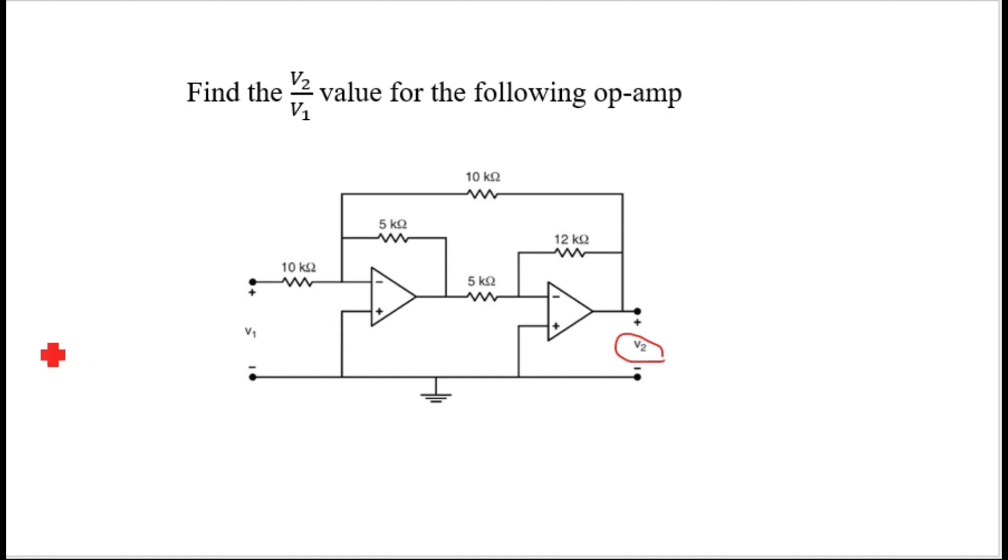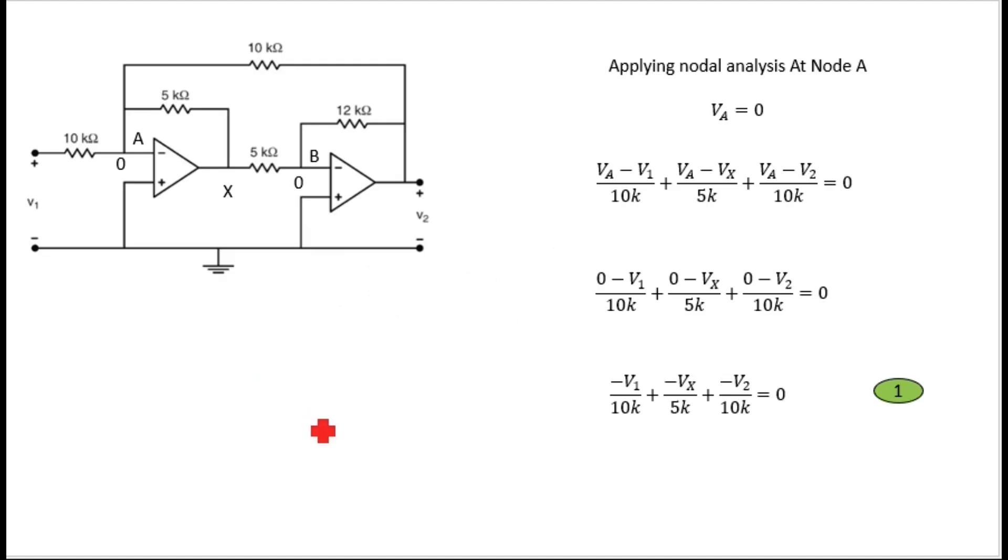Before starting, please like and subscribe my channel. Now let's proceed. This is our circuit. I have given this node as A and this node as B. Due to virtual ground, VA means the inverting terminal and non-inverting terminal both will have the same potential, so VA will become zero.